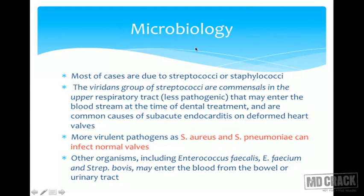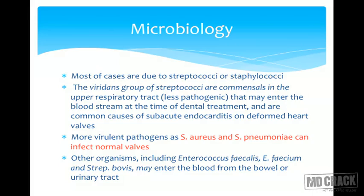Now, regarding microbiology — most cases are due to streptococci or staphylococci. The viridans group of streptococci are common commensals in the upper respiratory tract; they are less pathogenic but may enter the bloodstream at the time of dental treatment and are common causes of subacute endocarditis on deformed heart valves.